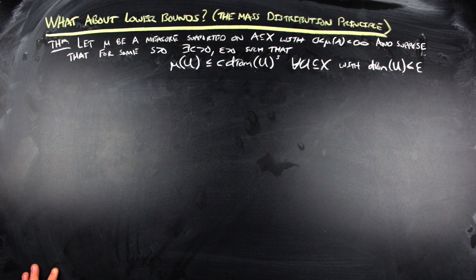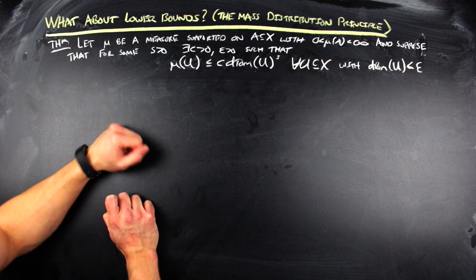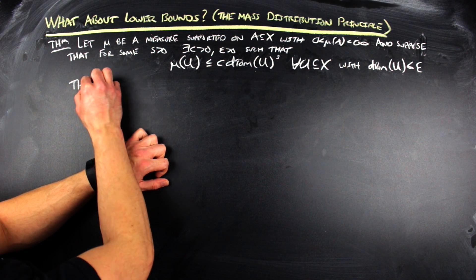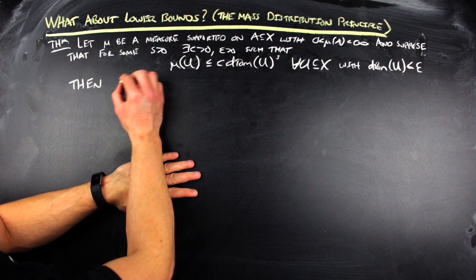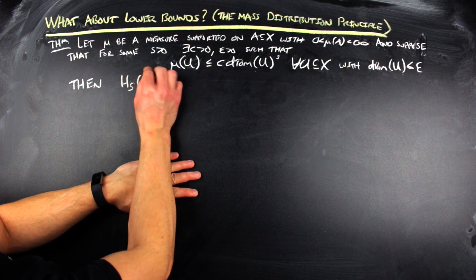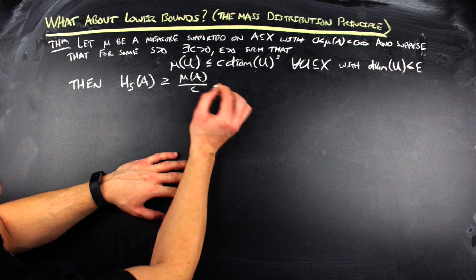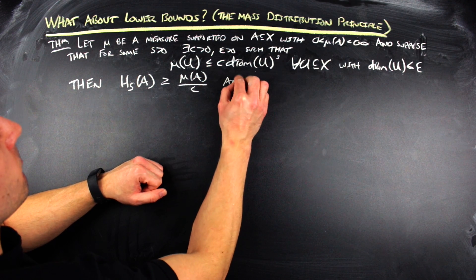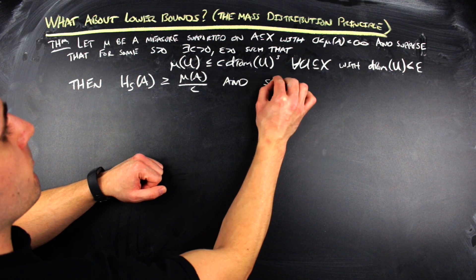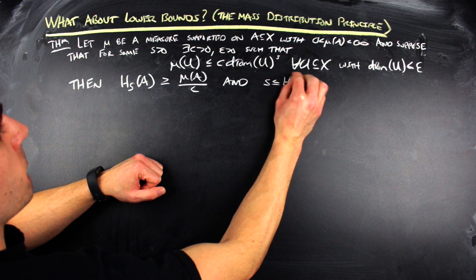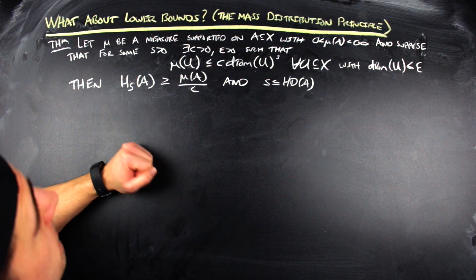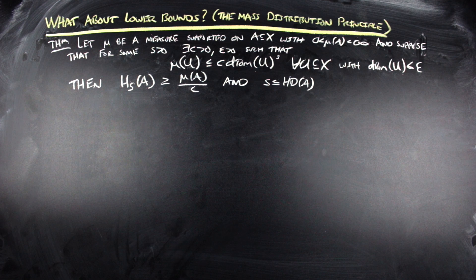So if you can find sets within your metric space that are small enough, you can get under the gauge function up to a constant by using the measure of that set. If you fit that condition — if you can find a finite measure that lets you underestimate the gauge function up to a constant multiple — then the theorem says the s-dimensional Hausdorff measure of A is greater than or equal to mu of A over c. And consequently, that s is going to be less than or equal to the actual Hausdorff dimension of A.